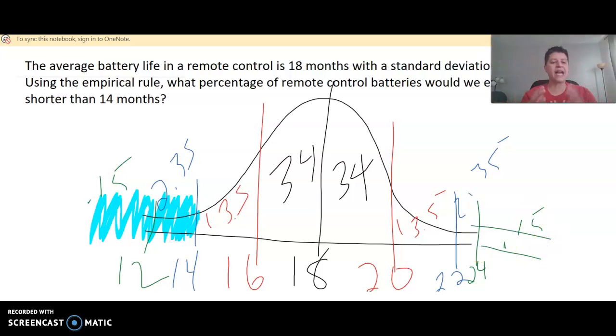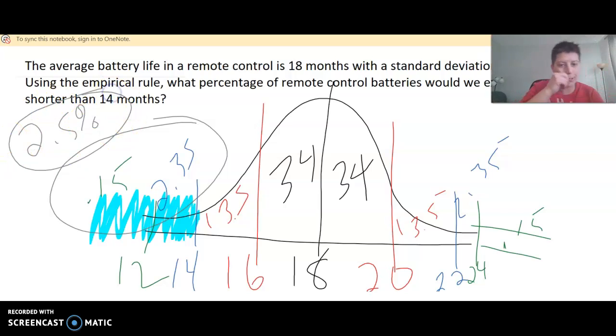Okay. So, then if you say, okay, I want shorter than 14, which is highlighted here in blue, it makes it a little easier. You just have to add all of the percentage that are part of that piece. So, 2.35 plus 0.15 is 2.5%. So, 2.5% of remote-controlled batteries will last shorter than or less than 14 months.